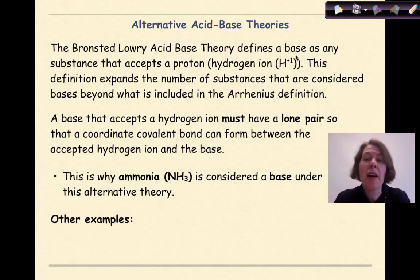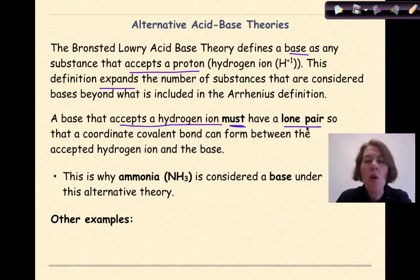The Bronsted-Lowry base theory defines a base as any substance that accepts a proton, a hydrogen ion. This definition expands the number of substances that are considered bases beyond what is included in the Arrhenius definition. A base that accepts a hydrogen ion must have a lone pair so that a coordinate covalent bond can form between the accepted hydrogen ion and a base.